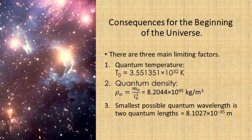There are three main limiting factors. Quantum temperature, where T0 equals 3.551351 times 10^32 Kelvin. Quantum density at 8.2044 times 10^95 grams per cubic meter. And the smallest quantum wavelength of two quantum lengths equal to 8.1027 times 10^-35 meters.